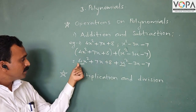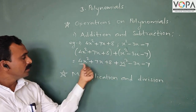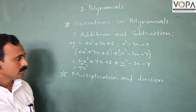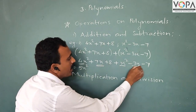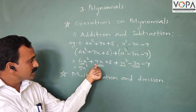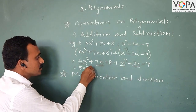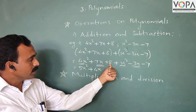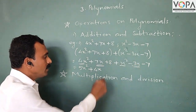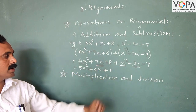Then 4x² + x²: here the coefficient is 4 and here 1. Then 4 + 1 = 5, so 5x². Now 7x and -3x are also like terms. The coefficients are 7 and -3. Then 7 - 3 = +4x. Now 8 and -7: 8 - 7 = +1. So the answer is 5x² + 4x + 1.